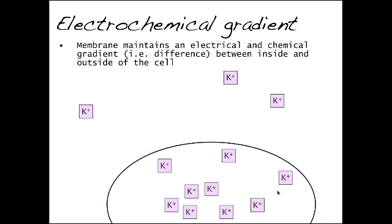Conversely, there's more potassium ions inside the cell compared to outside. So potassium would like to move out down its concentration gradient.